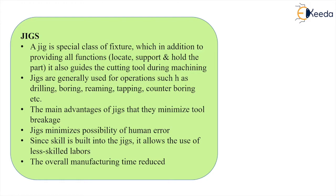Jigs also minimize the possibility of human error by making the loading of the part into the jig in only one way against the locator. It also allows the use of less skilled labor since the skill is built into the jig already. The overall manufacturing time is reduced because the setup time for the part and the tool is reduced to the minimum by using jig bushes, locators and clamps.